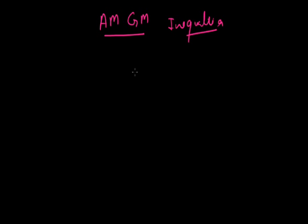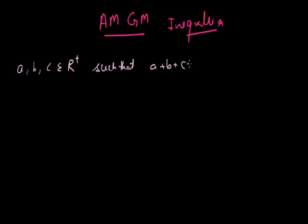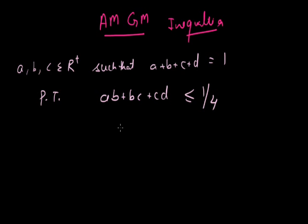In this video we will discuss some good problems. First problem: if A, B, C and D belong to real positive numbers such that A plus B plus C plus D is equal to 1, prove that AB plus BC plus CD is less than or equal to 1/4. Now we need to get the value AB, BC and CD which is less than or equal to 1. This is a very tricky question.